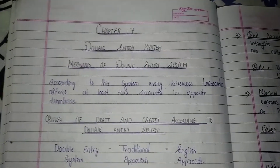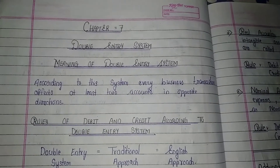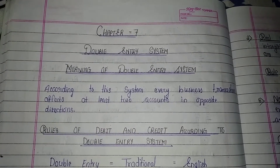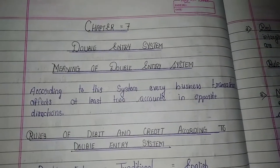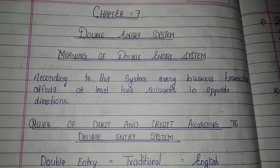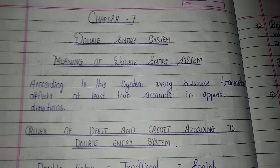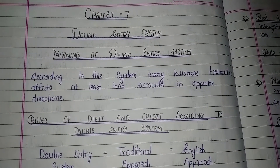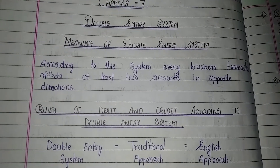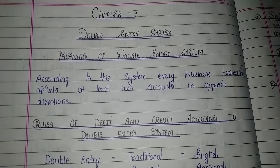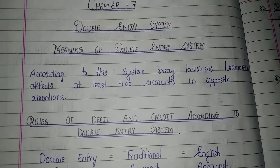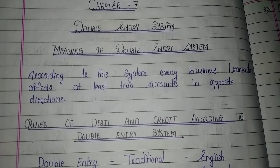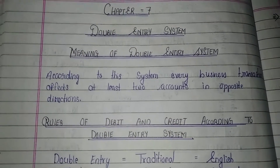Today we are going to start chapter number 7 of accountancy for class 11th, which is the double entry system. According to this system, every business transaction affects at least two accounts in opposite directions, as we have also studied in general entries.